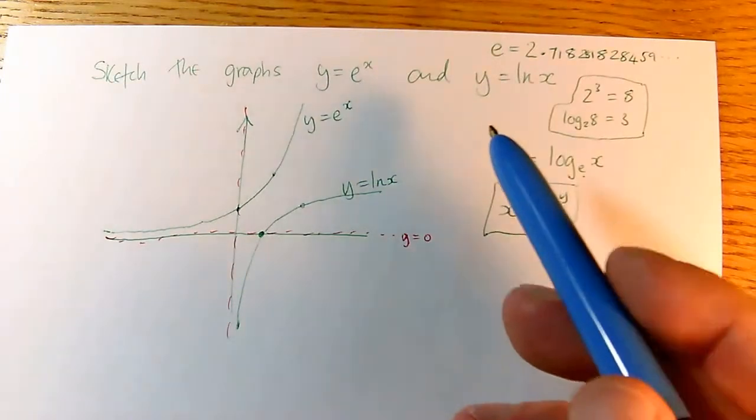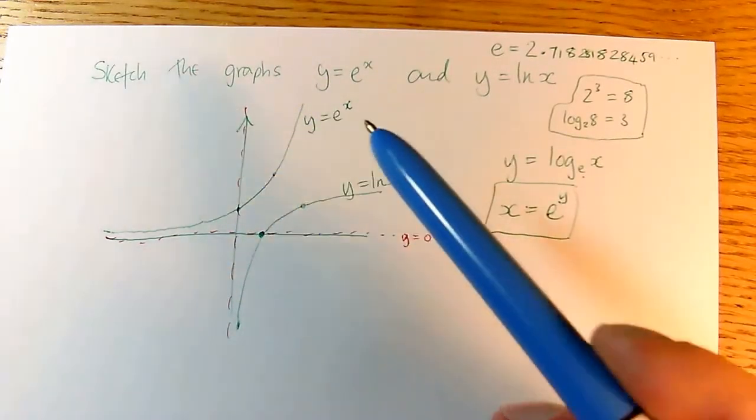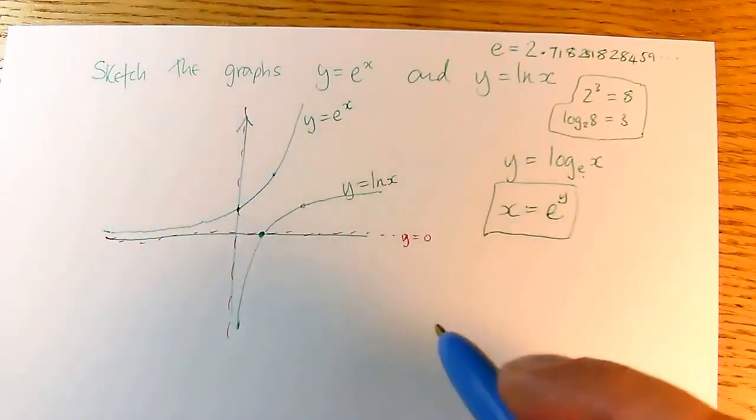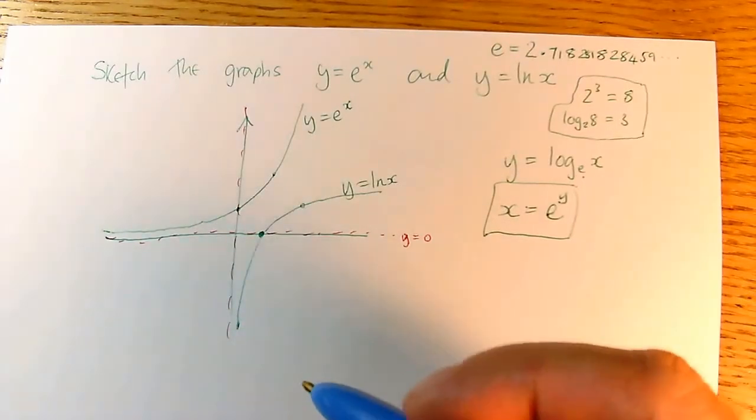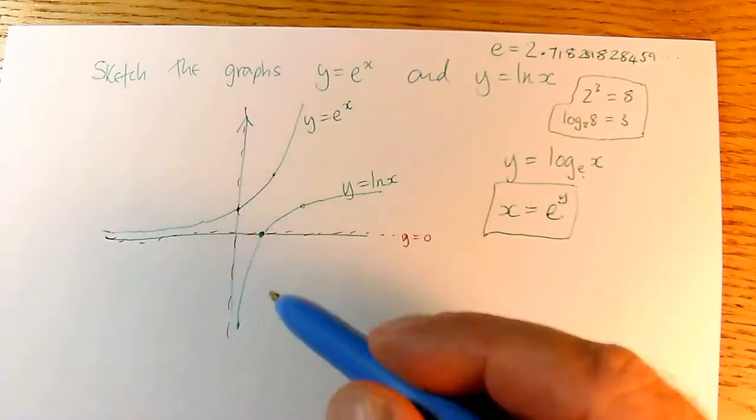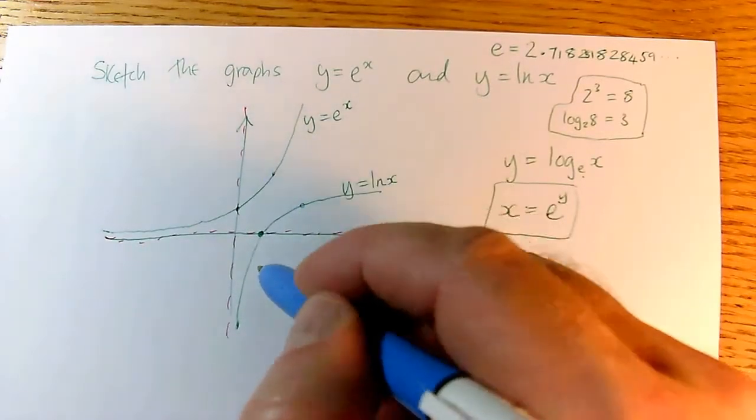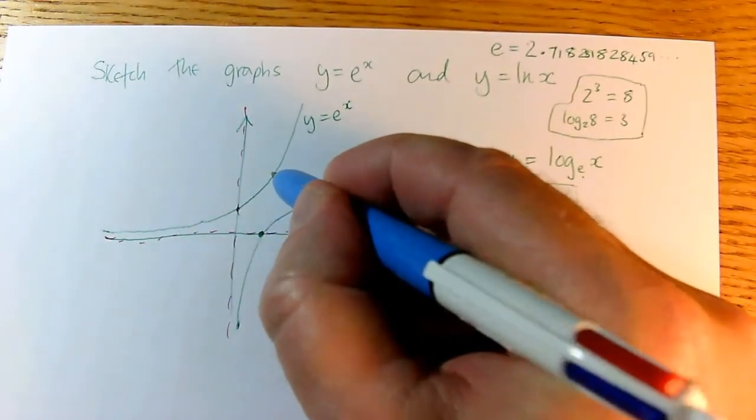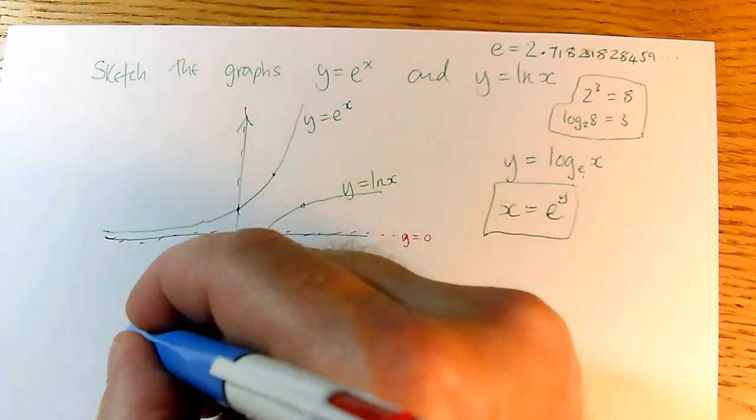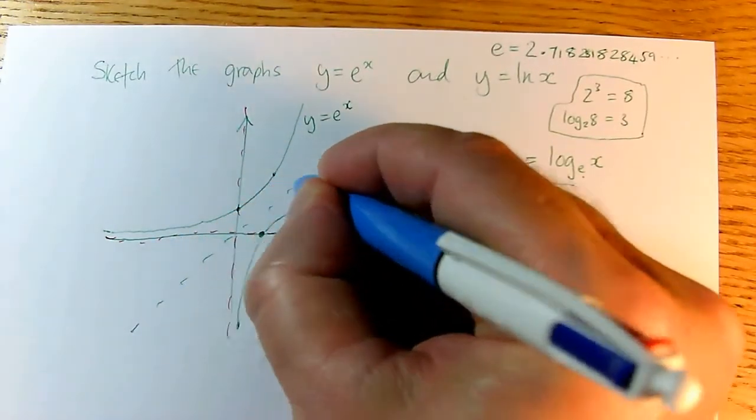So we've done what the question asked us to do, which is to sketch the graphs y equals e to the x and y equals log x. But the relationship between these two graphs is a transformation. So what transformation swaps over my x and y coordinates? Well, what I'm doing is I'm hopping from up here to down here. I'm hopping to the other side of this diagonal line here.